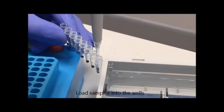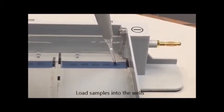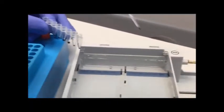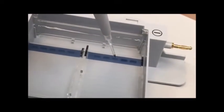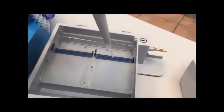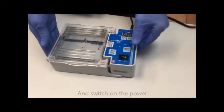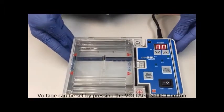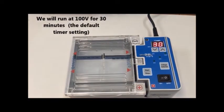Now we pipette our samples into the gel wells. After the samples are loaded, connect the power cord to the back of the power supply and switch on the power. The voltage can be set by pressing the voltage select button on the MiGel power supply. We are going to run the gel at 100 volts for 30 minutes.